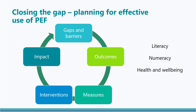When planning for PEF, it's helpful to work through these five stages. Stage one: undertake a robust contextual analysis to identify the pupils in your school most affected by poverty, the barriers they face, and the poverty-related attainment gaps. The gaps and barriers identified will provide the rationale for your PEF plan.